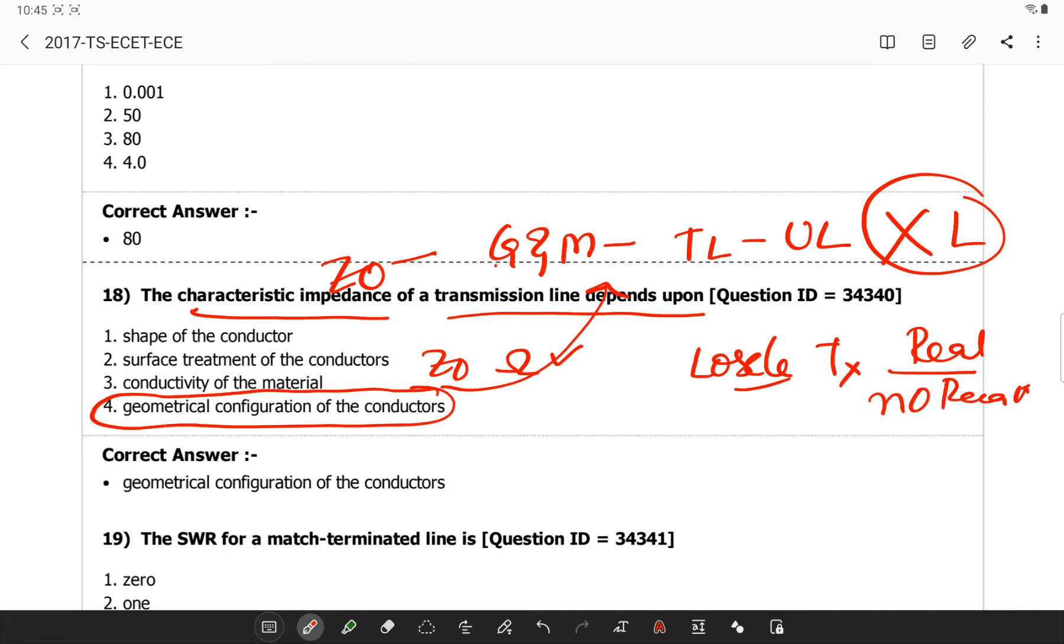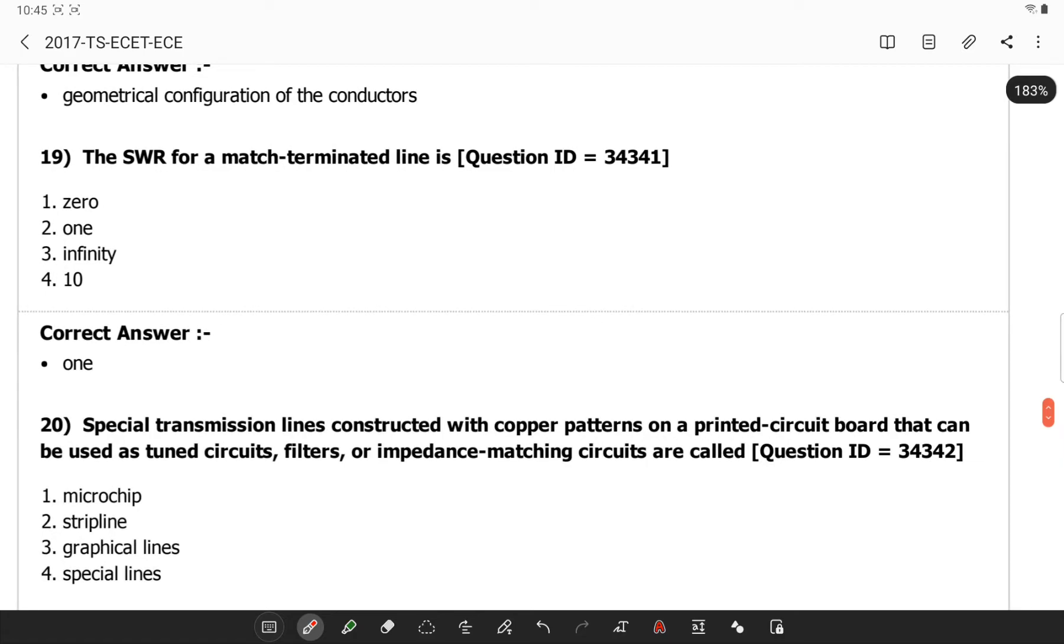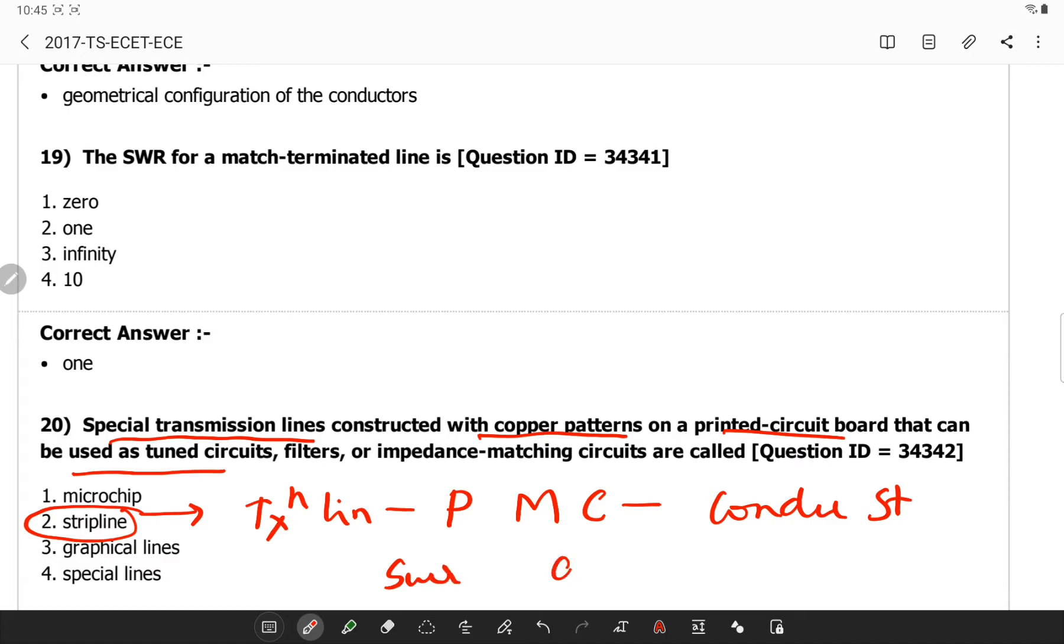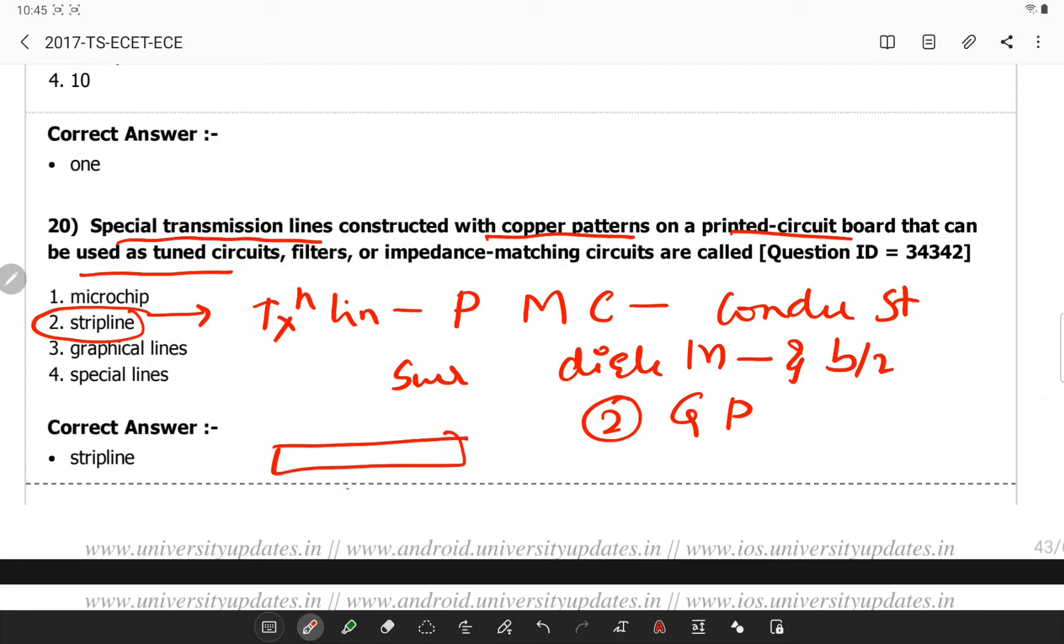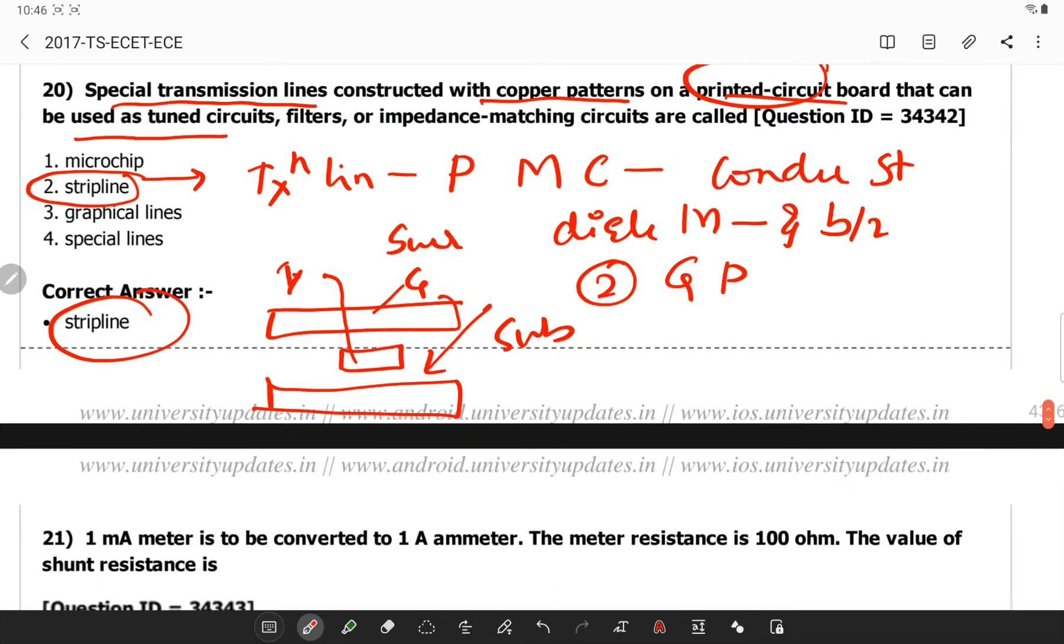Special transmission lines constructed with copper patterns on printed circuit boards that can be used as tuned circuits or impedance matching circuits are called. This is a definition of strip line. Strip line is specifically a transmission line based on planar microwave circuitry. It typically consists of conducting strips surrounded by dielectric material and sandwiched between two conducting ground planes. The two ground planes, so this is ground plane one and you have a transmission line and this is another ground plane in a substrate. You have a substrate, transmission line and grounding. You have a PCB like this.